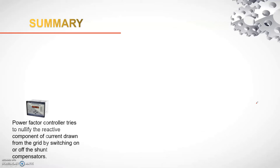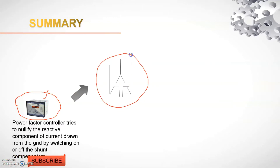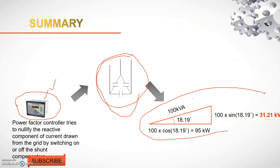To summarize: we have seen the power factor controller and how it controls the switching of capacitor banks. The capacitor banks are switched by the power factor manager, and the calculation for the required KVAR compensation is done through the power triangle. These three concepts — the power factor controller, capacitor bank switching, and power triangle calculation — are the key learnings from this video.